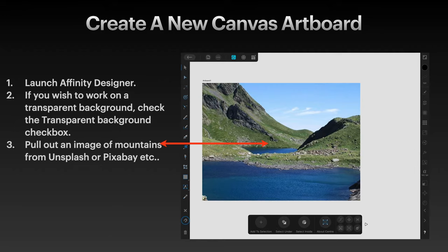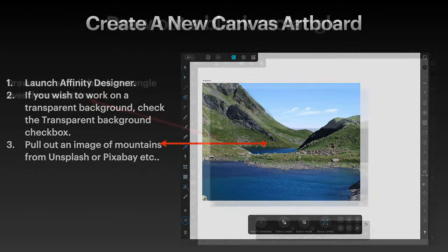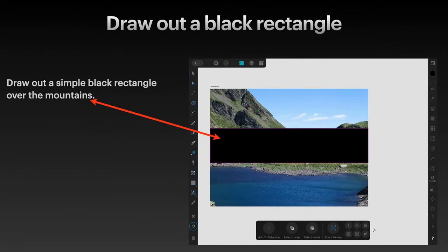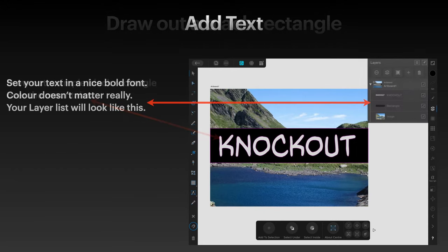Pull out an image of mountains from Unsplash or Pixabay or any source that you like. Make it the full size of your artboard. Then simply draw out a simple black rectangle over the mountains — that's just a simple black background for this exercise. And we're going to put some plain white text on it.